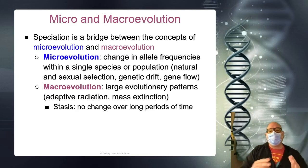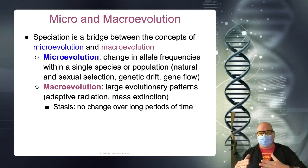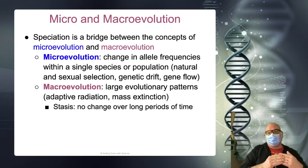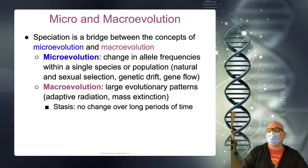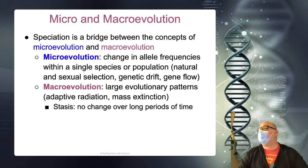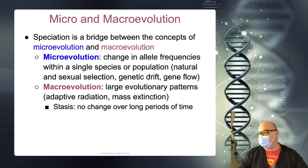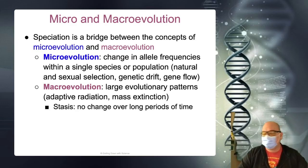Macro evolution involves very large changes — branching out into a new trait. Macro evolution can go into what's called stasis, where there are no changes over a very long period of time. You can think of this as something like horseshoe crabs — they have been the same forever. I did my undergraduate research on horseshoe crabs, so they're near and dear to me.